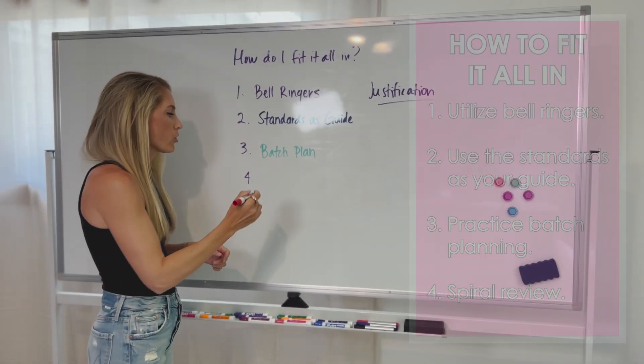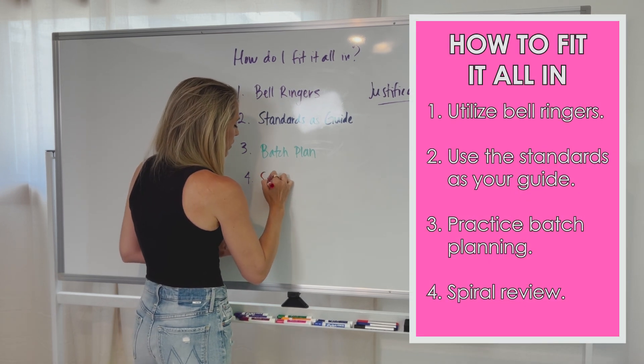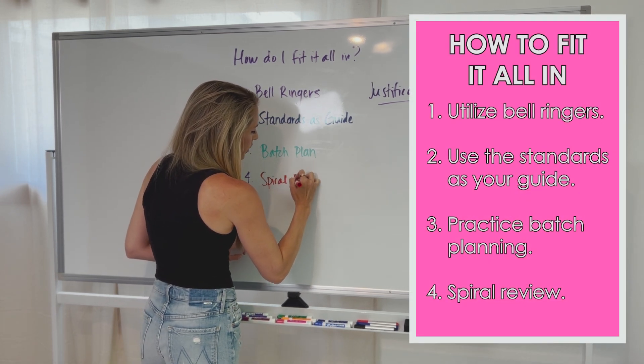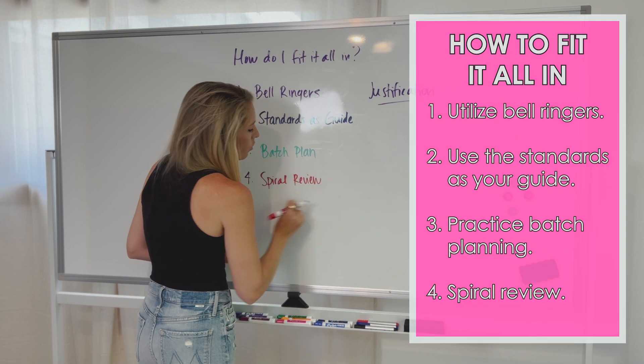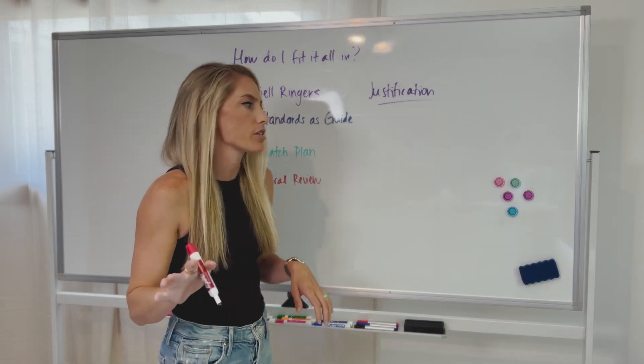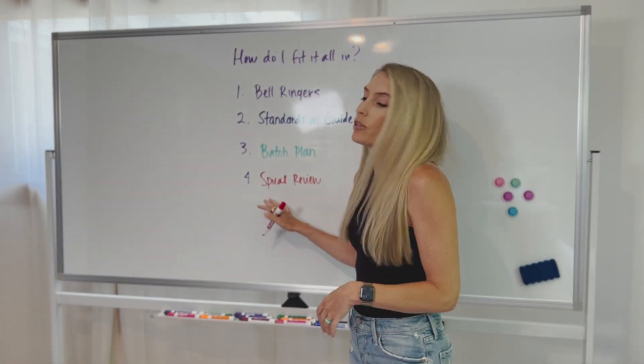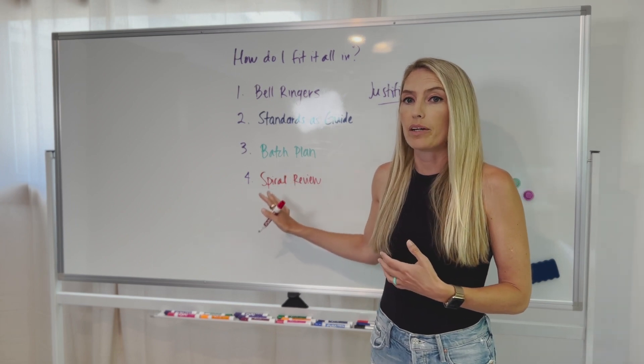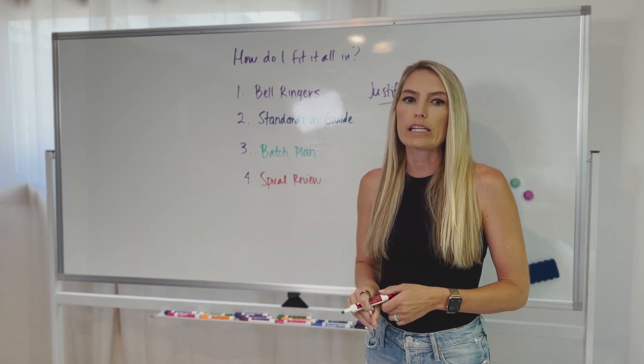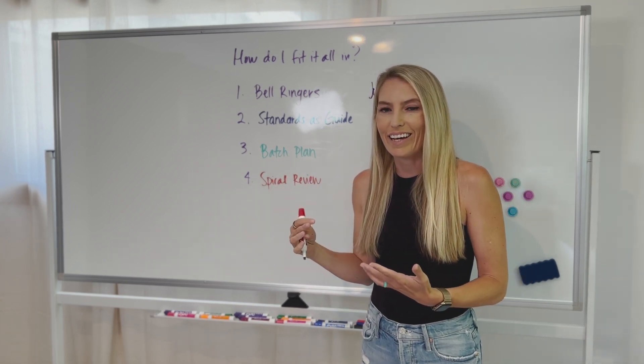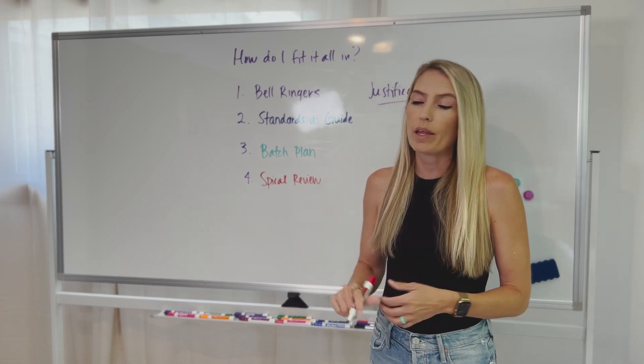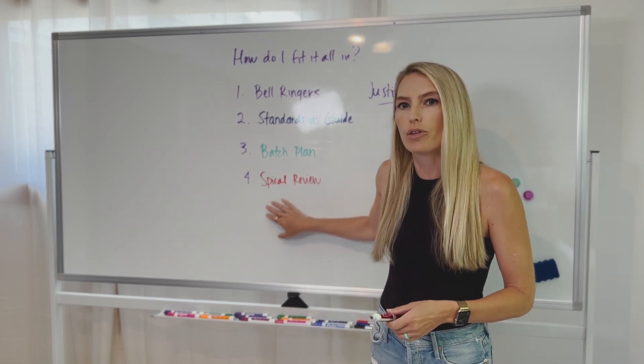All right. And then the last thing that we suggest that you do for fitting it all in is spiral reviewing your lessons, your activities, your standards, and things like that. And the reason that we do spiral review, this is like math, right? In math, we're very familiar with this concept, but it's not really applied to ELA the way that we feel that it should be. And when we do this and we have our teachers do this, we see a huge return on investment of this time in doing this.